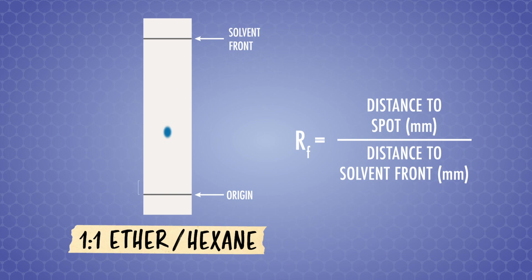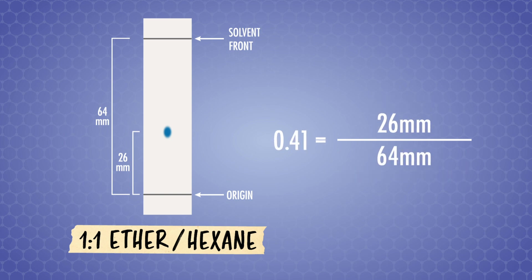To calculate RF, we measure the distance traveled by the spot from the origin and divide it by the distance from the solvent front to the origin, which is how far we let the solvent move up on the plate. We have to remove the plate from the chamber before the solvent reaches the top, otherwise the spot tends to spread out too much. Doing the math in this one-to-one solvent system, our spot has a retention factor of 0.41.